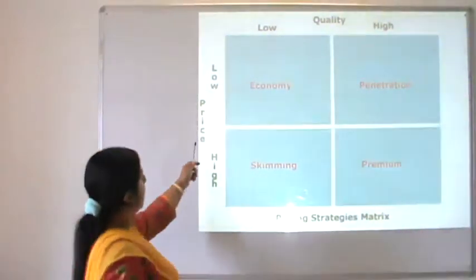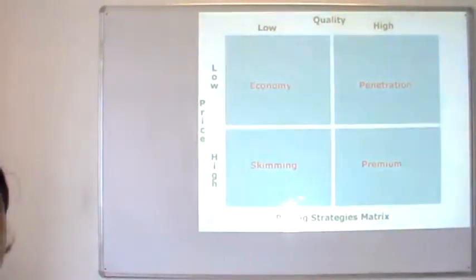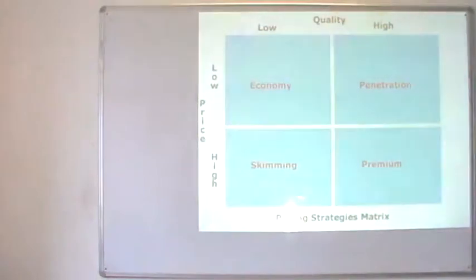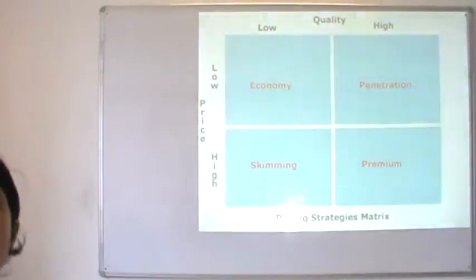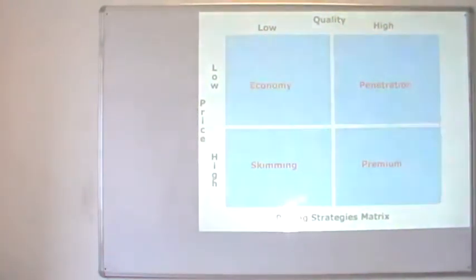A company can either go for a penetration strategy or a skimming strategy or a premium pricing strategy. There are also other popular strategies such as psychological pricing or odd-digit pricing, where companies choose a price like 3,999 rupees. The last digit is odd and has an impact on the consumer's mind — the product does not appear to be in the 4,000 bracket, and therefore it makes all the difference.